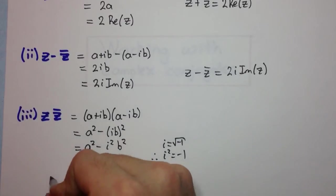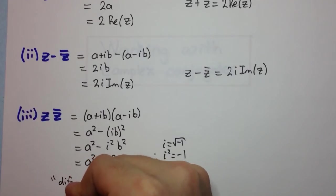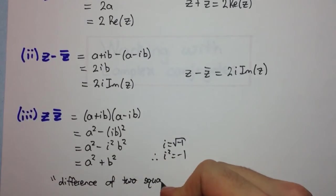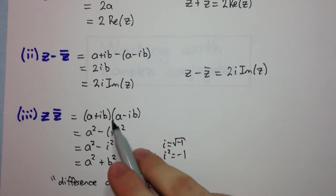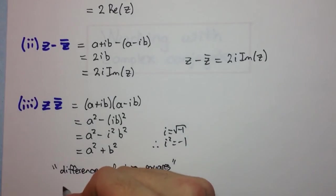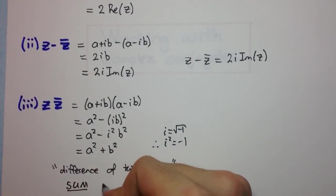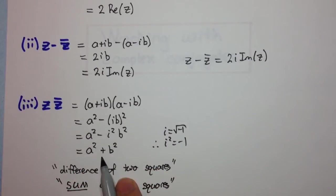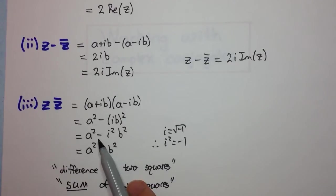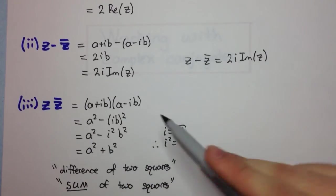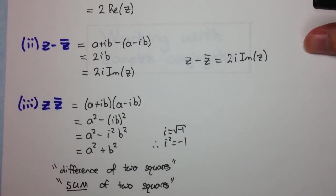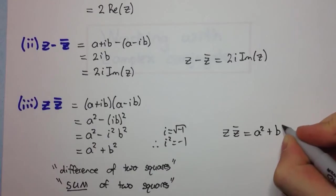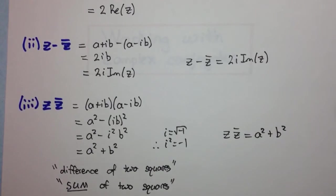We tend to call this a difference of two squares, but because we're dealing with complex numbers, we now change the difference to a sum of two squares. Here we have a plus sign between the two squares, where usually we would have a minus sign — that's because we're dealing with i squared. So z times z bar is equal to a squared plus b squared. Those are three simple results.